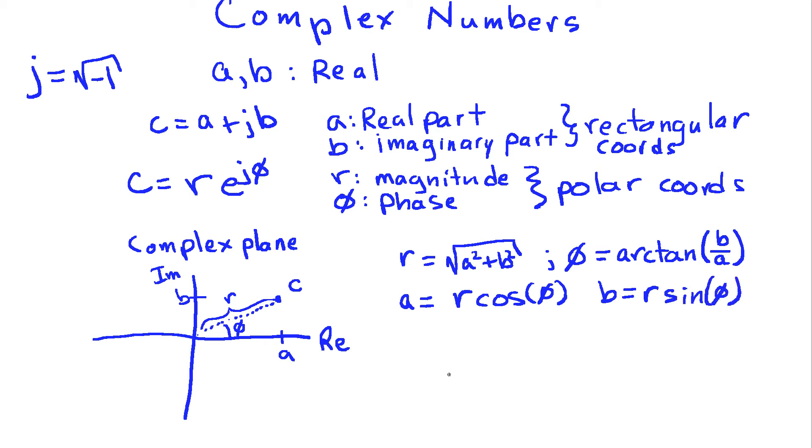Now I said that depending on what we want to do with these complex numbers, it's useful to have either the rectangular coordinate representation or the polar coordinate representation. And it turns out that if we want to add complex numbers, or subtract them, that's best done in rectangular coordinates. But if we want to multiply or divide, that's best done in polar coordinates.